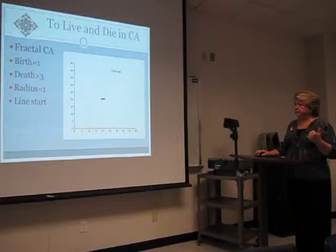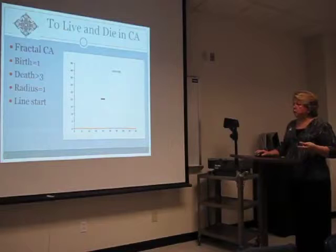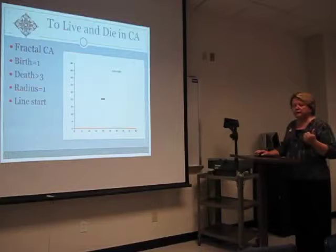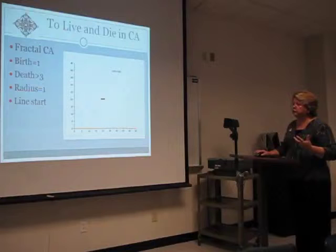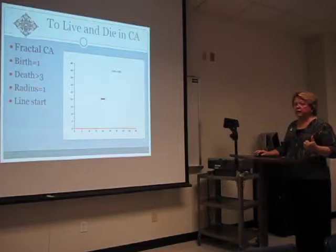Different one. This is birth equals one, death is greater than three, radius equals one, and it's a line start also. This one's different — it's a very dense pattern that stabilizes in the center very early, so eventually the only depth that you see is on the perimeter of the pattern. I'm going to walk you through 12 time steps and then show you what time step 127 looks like. And it's a kick.